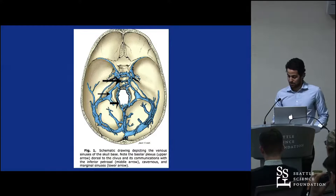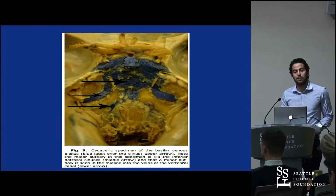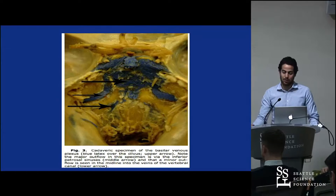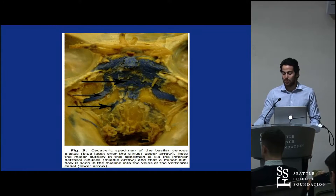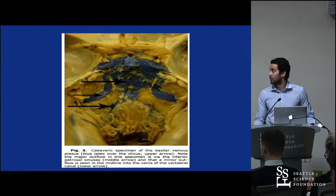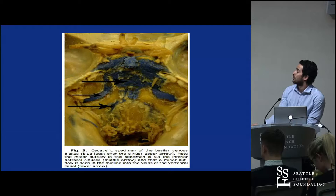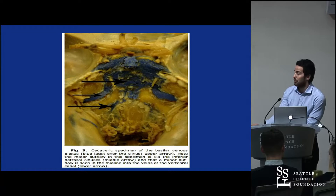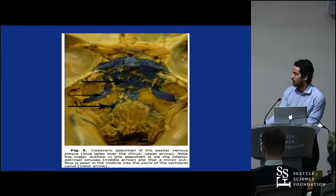Last but not least is the basilar plexus, located on the dorsal aspect of the clivus. It is situated dorsal-superior to the clivus and dorsal to the tectorial membrane inferiorly, covering almost the entire dorsal surface of the clivus. In approximately 70% of specimens in this study, it drains towards the inferior petrosal sinus and towards the base of the cranium where it exits toward the vertebral plexus.